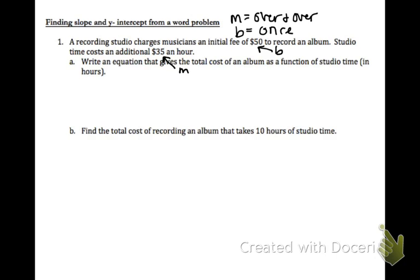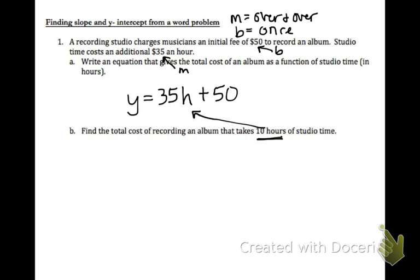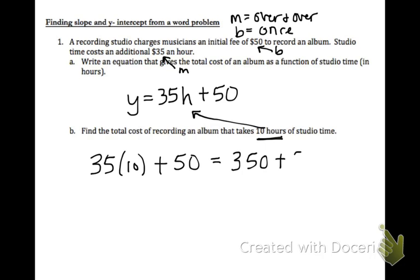Part a says to write an equation that gives the total cost of an album as a function of studio time. We pretty much have it done, because we've already labeled our m and our b. It's going to be y equals 35h plus 50 — I'm using h for hours. Part b says to find the total cost of recording an album that takes 10 hours. I'm going to plug in 10 for hours: 35 times 10 plus 50. 35 times 10 is 350, and 350 plus 50 is 400. So this is $400 — that's the total amount it would cost for 10 hours of studio time.